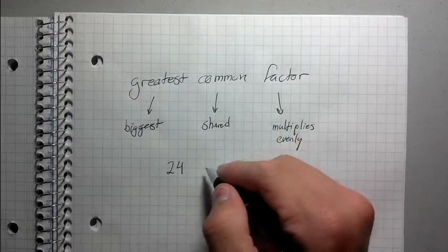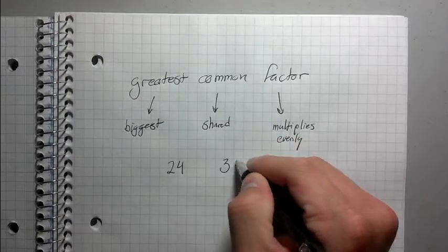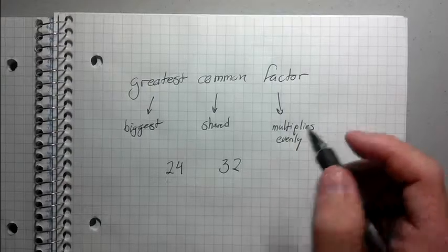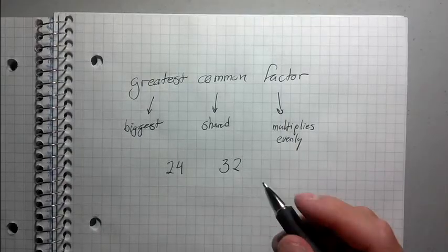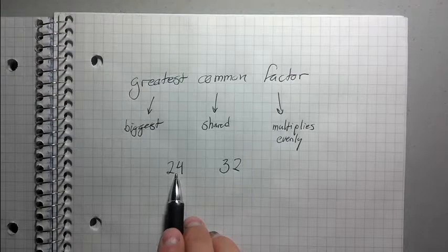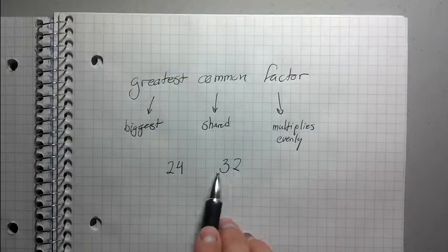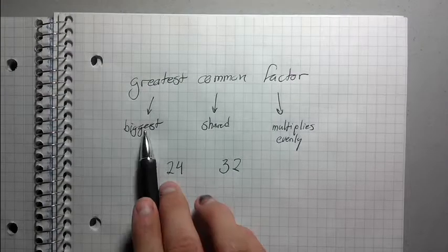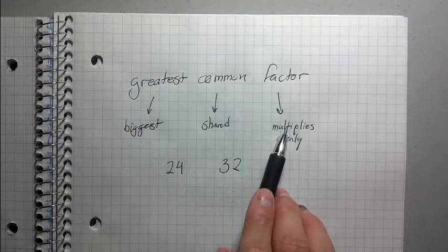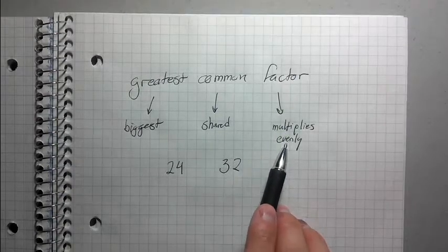How about 24 and 32. If I'm looking for the greatest common factor, or the GCF, of 24 and 32, I'm looking for the biggest shared thing that multiplies into each of them evenly.